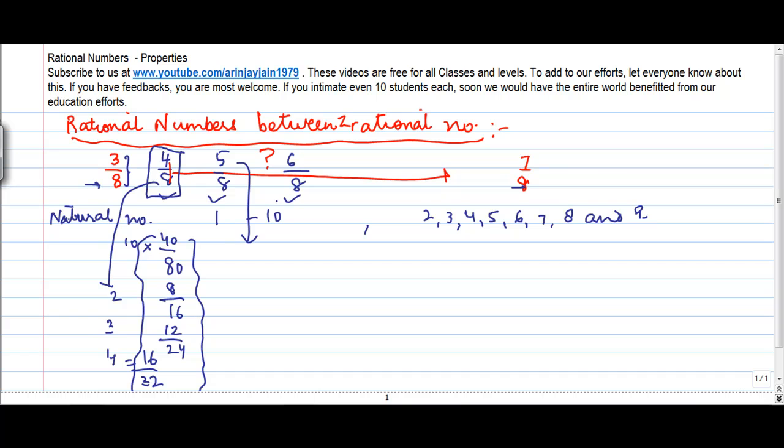Similarly, for 5/8, if you multiply that by 2, you get 10/16. If you multiply it by 3, you get 15/24. If you multiply it by 4, you get 20/32.